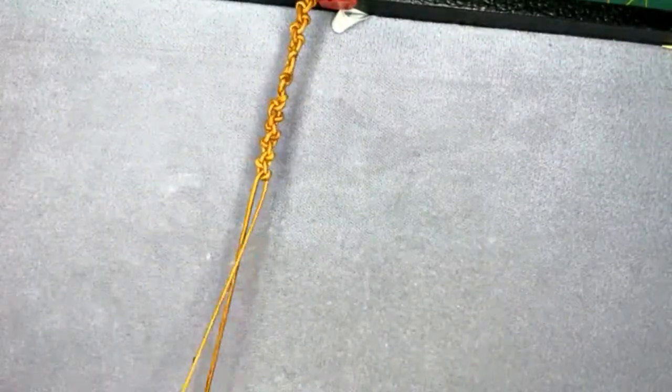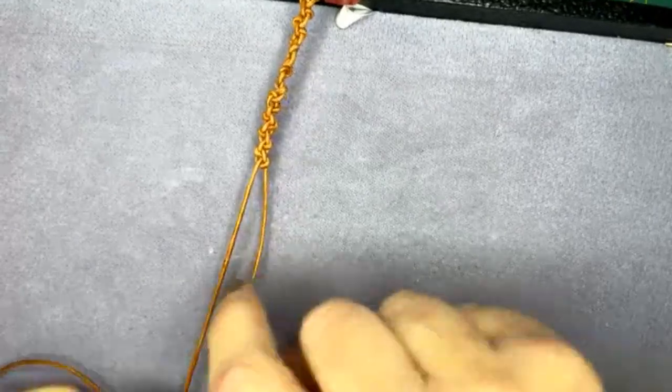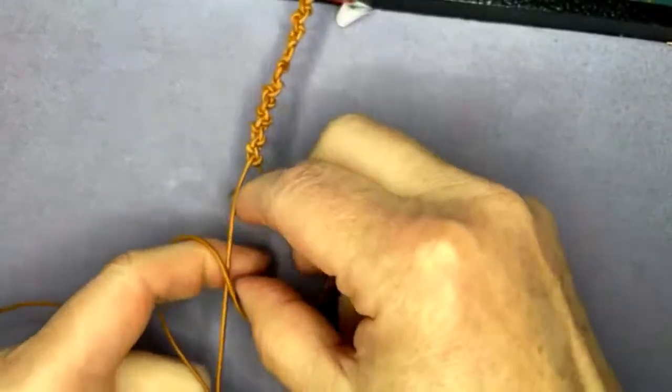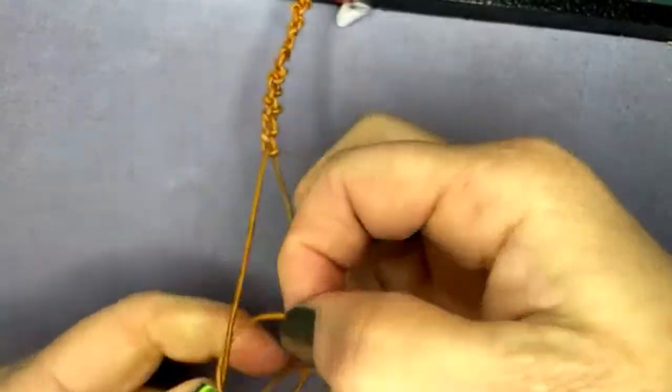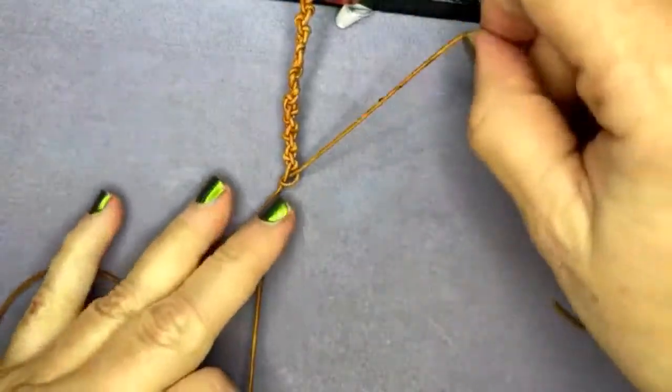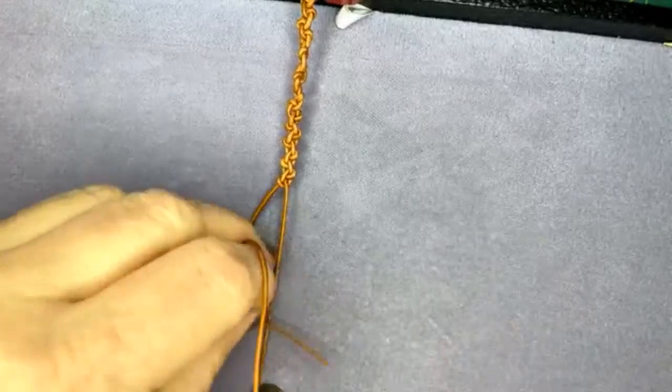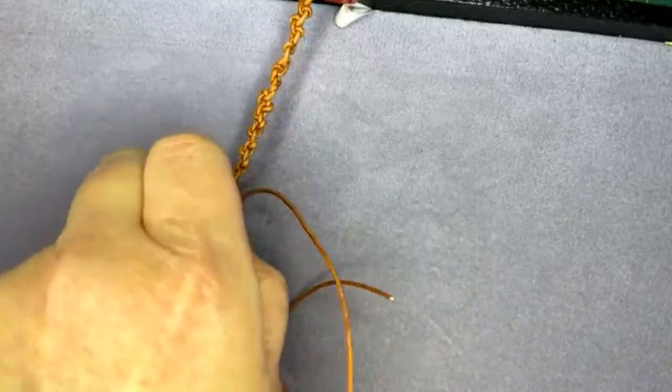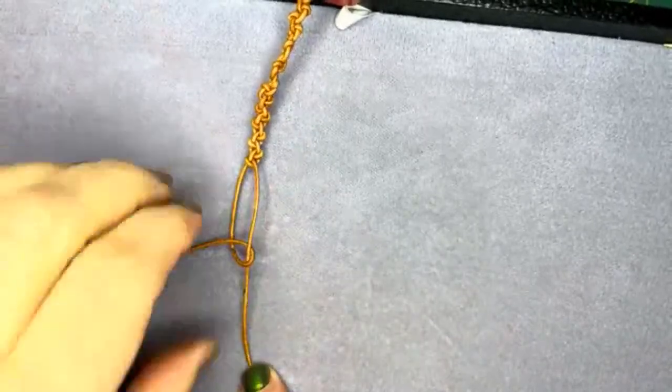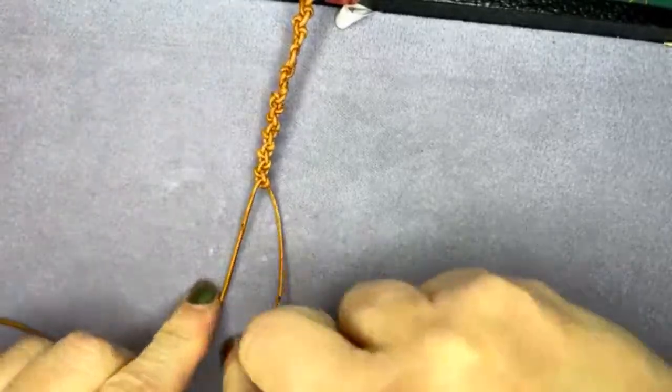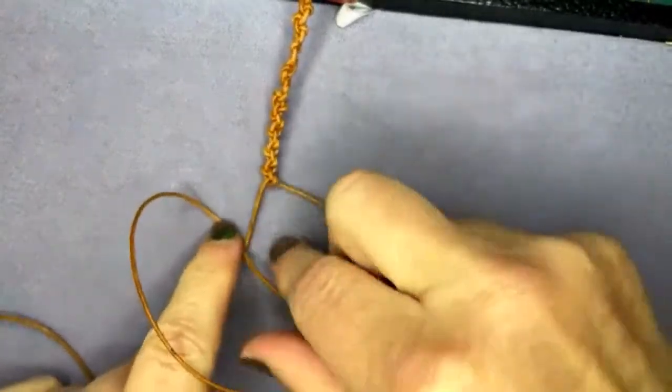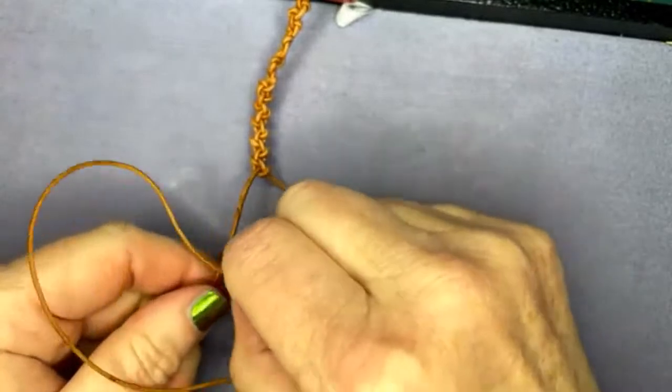So try not to twist your thread. There you go. And I think what I have a tendency to do is I'm kind of twisting it so that this thread actually is going underneath my center thread. But you want to make sure that it goes over the top. There we go. So that you have that nice chain of mushrooms. See? I'm doing that again. I'm pulling that over to the side. I don't want to do that.